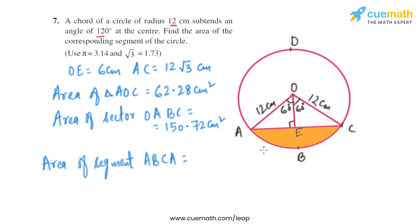Now let's find the area of segment ABCA: that equals 150.72 minus 62.28. On solving this, we get the area of segment as 88.44 square centimeters.